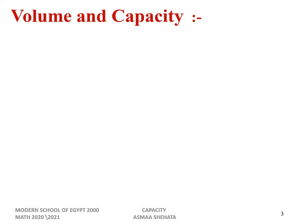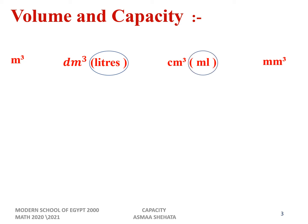As we know, the units to measure volume are: meter cube, decimeter cube, centimeter cube, and millimeter cube. The units to measure capacity are liter and milliliter. Liter means decimeter cube — we write it beside decimeter cube inside the circle — and milliliter means centimeter cube — we write it beside centimeter cube. When we convert from meter cube to decimeter cube, we multiply by 1000. Each step means times 1000.